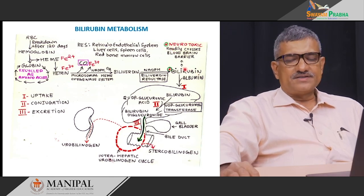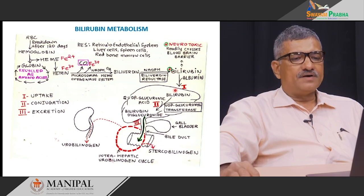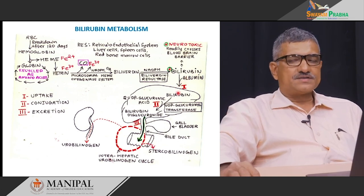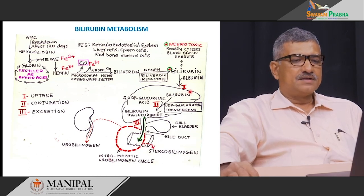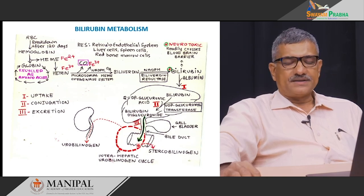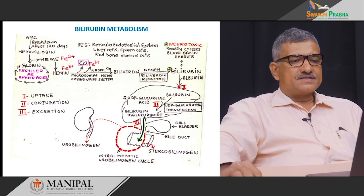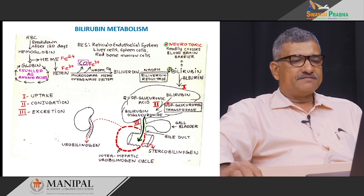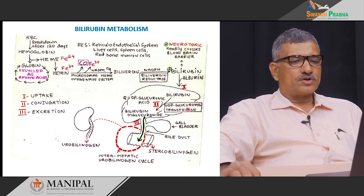From the reticuloendothelial system, bilirubin is carried to the liver in combination with plasma albumin. The liver then processes this toxic unconjugated bilirubin by means of three main phases. The first phase is uptake of bilirubin, the second phase is conjugation of bilirubin, and the third phase is release of bilirubin into the intestine. Conjugation occurs in the liver parenchymal cells in the presence of UDP-glucuronyl transferase to convert bilirubin into bilirubin diglucuronide.